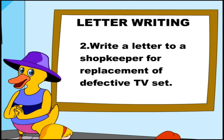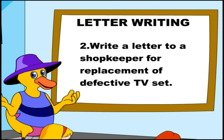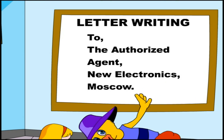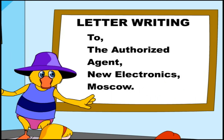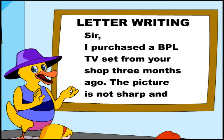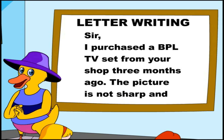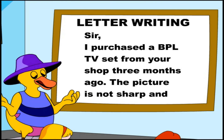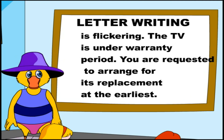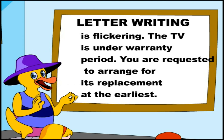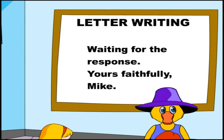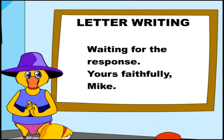Example 2 — Write a letter to a shopkeeper for replacement of a defective TV set. To: The Authorized Agent, New Electronics, Moscow. Sir, I purchased a BPL TV set from your shop three months ago. The picture is not sharp and it is flickering. The TV is under warranty period. You are requested to arrange for its replacement at the earliest. Waiting for the response. Yours Faithfully, Mike.